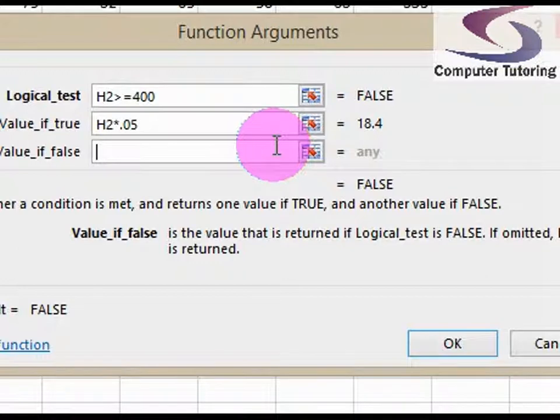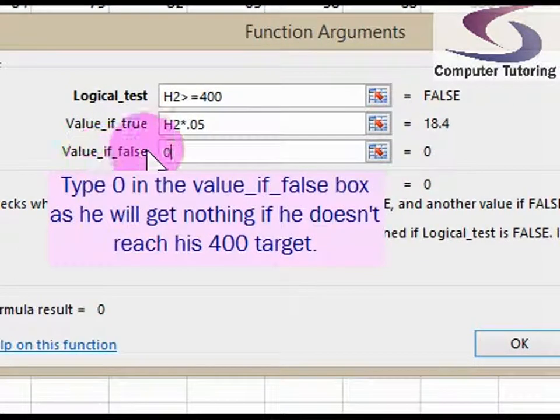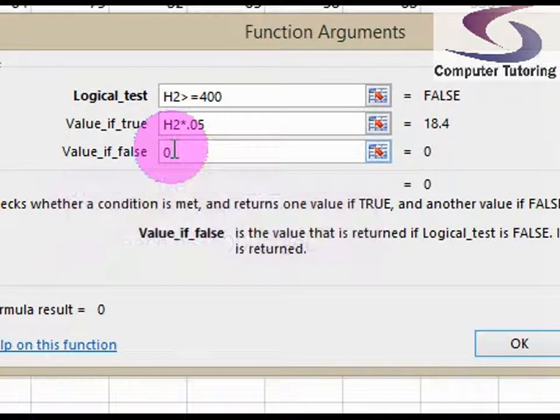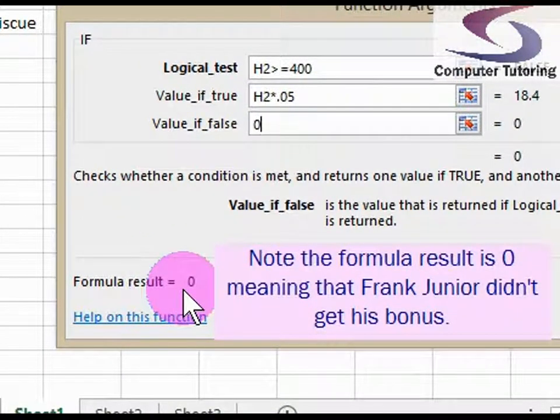What happens if he doesn't reach his bonus? Well, he gets a big fat zero. So you can see there that I'll type the zero in the value if false. And the result can be seen at the bottom as zero. So I can click on OK.